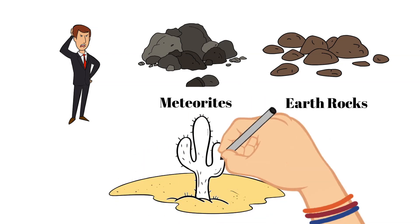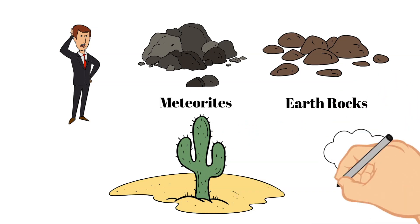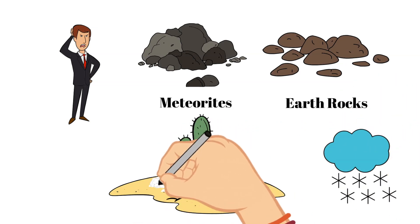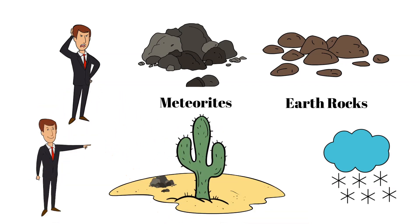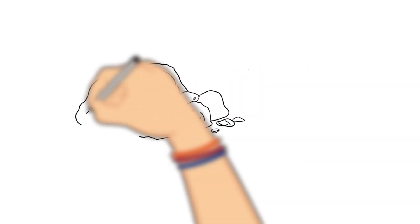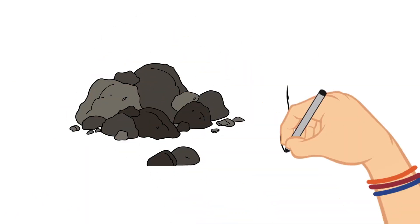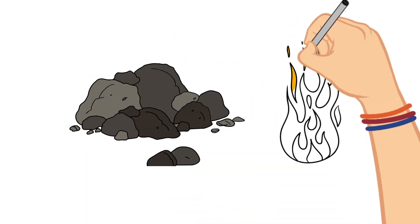This is also the case in icy deserts like Antarctica. So what do they look like? They often look similar to Earth rocks but usually have a burned exterior that can look shiny and is called a fusion crust.